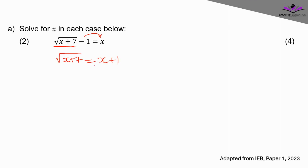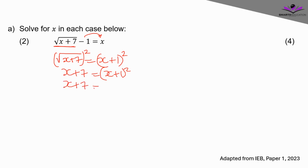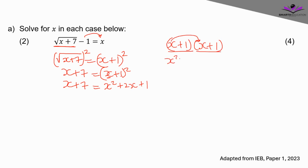After isolating the surd, we square both sides — the square root disappears and we get x + 7 = (x + 1)². Expanding (x + 1)² using the FOIL method: x times x gives x², x times 1 gives x, 1 times x gives x, and 1 times 1 gives 1. So x + 7 = x² + 2x + 1.